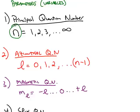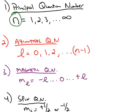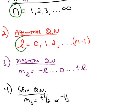The second variable is called l. The rule for l is it starts at 0, and the maximum it can be is 1 less than the value of n. So the quantum number l is determined by what the quantum number n is — that's going to limit your choices for l.